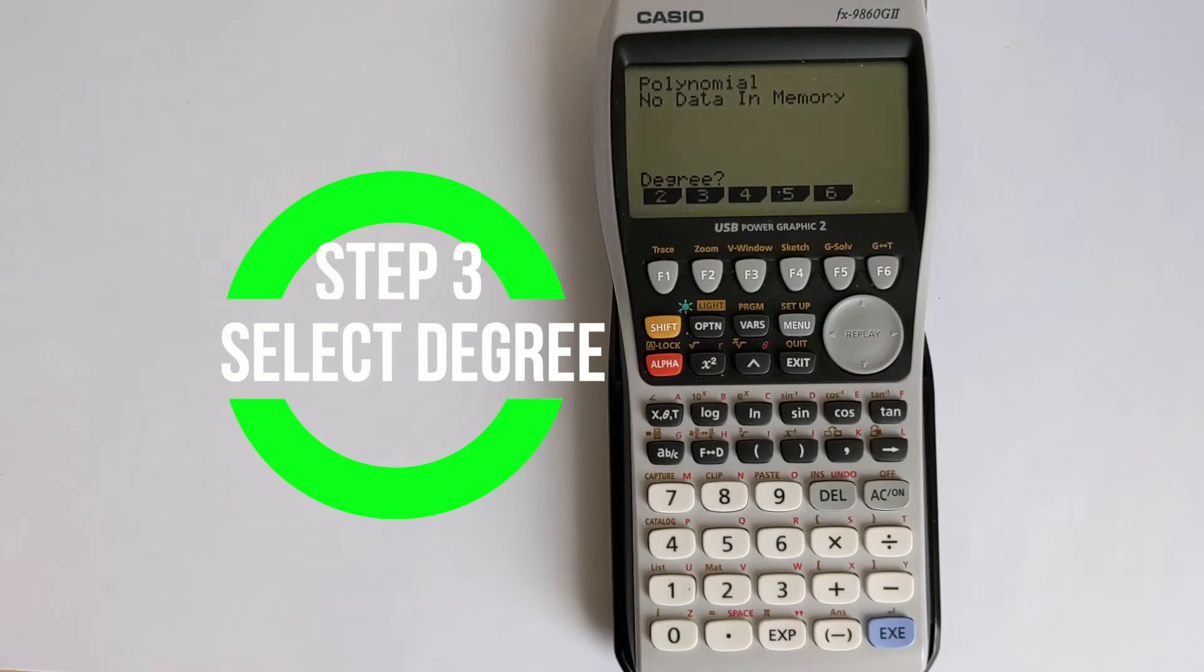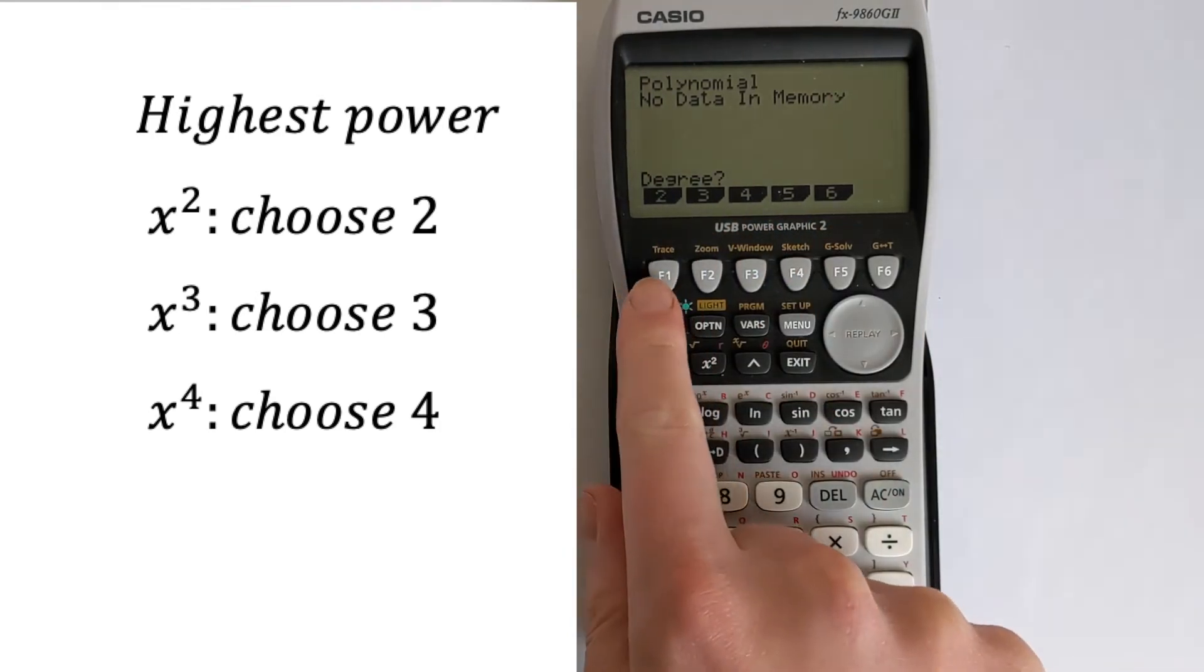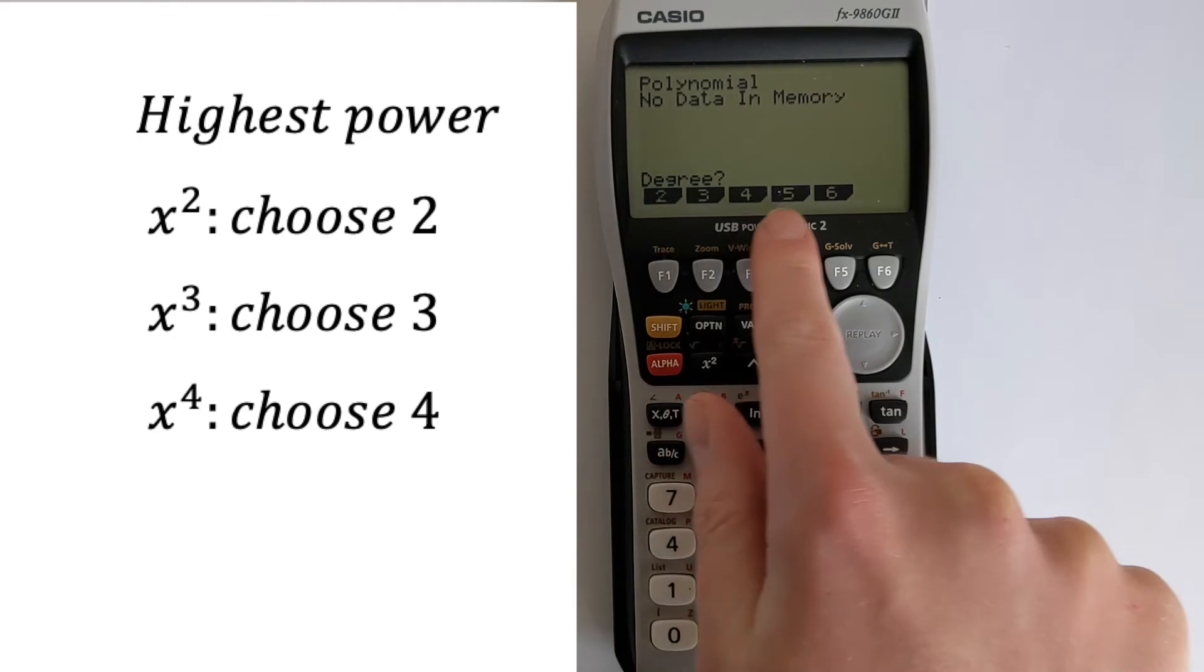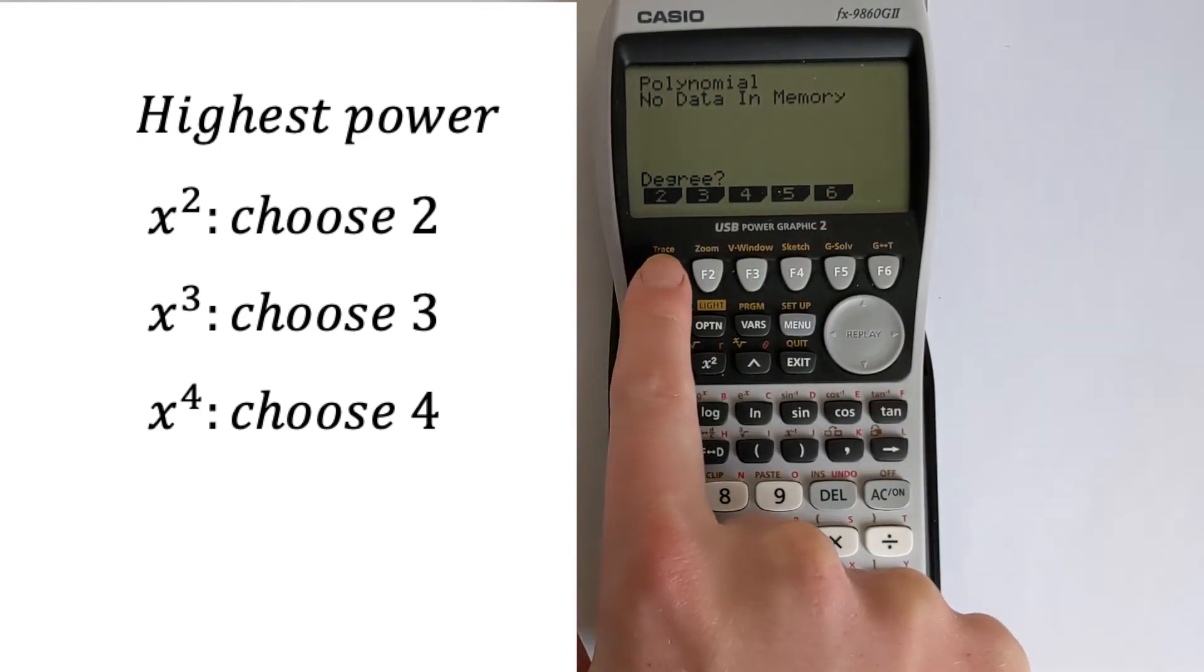It then asks us to choose the degree. So we've got x² as the highest power, so we'd be choosing option 2. If you had a cubic equation, you'd be choosing option 3. Or if you had x to the power of 4, that would be for option 4. So you're always looking at what is the highest power of x. Now, these buttons here with the f's line up with these buttons here. So we are selecting degree 2, so the button under that is F1.